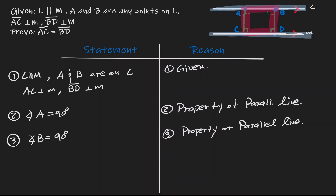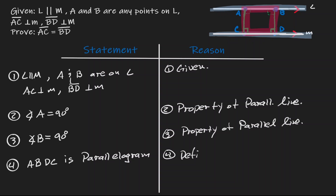So that's what we can write down as our next step. The reason is the definition — all interior angles are congruent. Now let's think about this. If we know that ABCD is a parallelogram, we know that opposite sides are congruent to each other. The opposite sides we want to concentrate on are AC and BD.